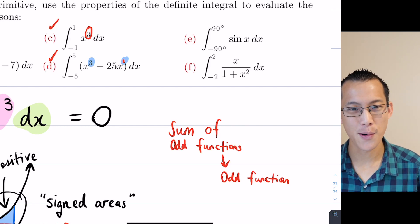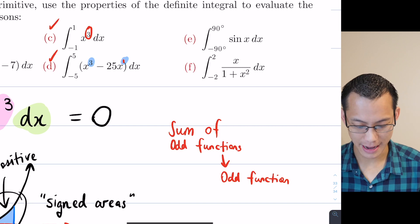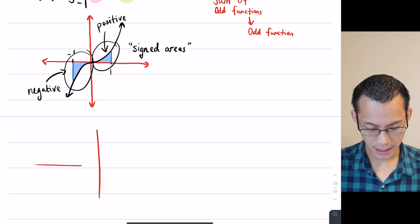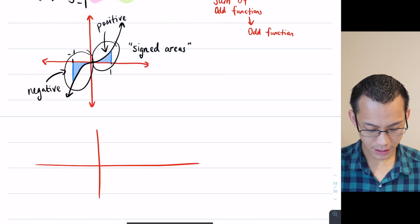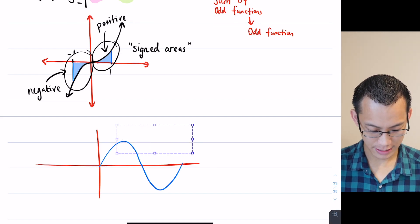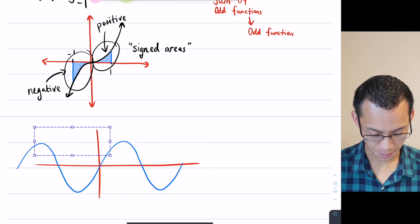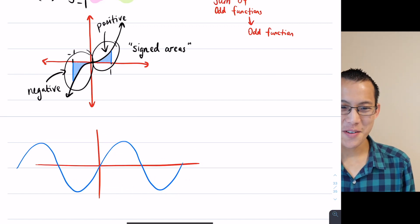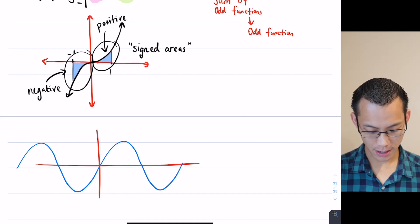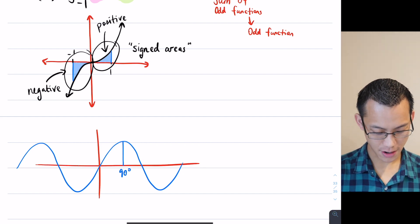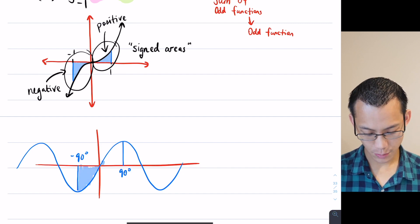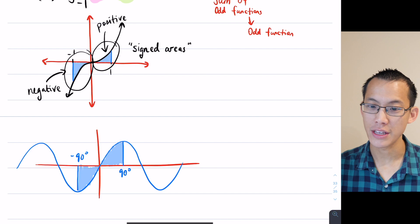Sine x being odd relies on having the image in your mind of what that graph looks like. Sine x looks like this — and you can see the same rotational symmetry. If we consider from negative 90 degrees to positive 90 degrees, the shaded areas are equal in magnitude but one is negative and one is positive. So yes, sine x is odd, consistent with having an odd-powered relationship.